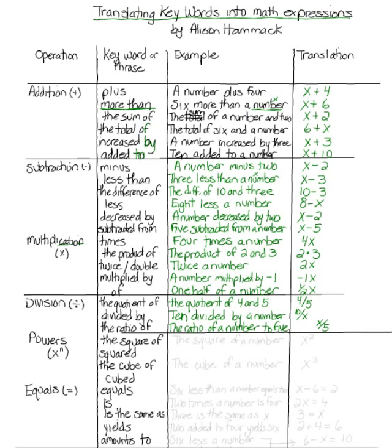Okay, next we have powers. And powers in a word problem are going to be referred to as the square of, or something squared, or the cube of, or cubed. So let's use the phrase, the square of a number. That's going to look like this. It's going to have an x and then a little superscript of a 2. Okay, the cube of a number is going to have your x and a subscript, superscript of a 3.